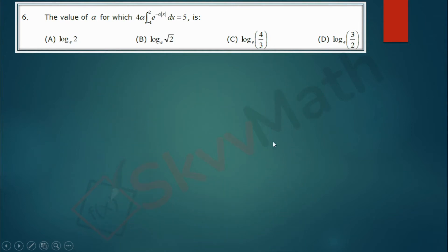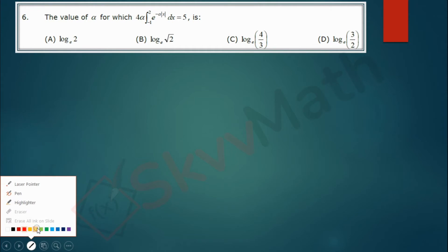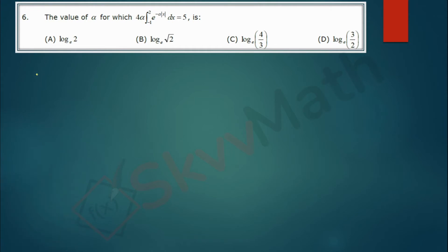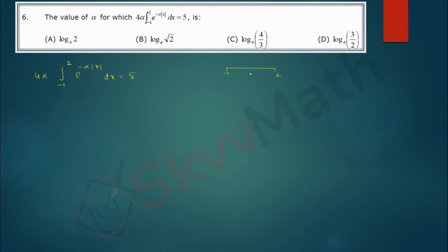Now we will start solving this problem. We have 4α times the integral, and we have to find the value of α. The integral is from minus 1 to 2 of e^(−α|x|) dx. Whenever you see a modulus function in definite integrals, you have to split the integral according to the positiveness and negativeness of x. Here x takes values from minus 1 to 2, so we split at 0: from minus 1 to 0, and then 0 to 2.